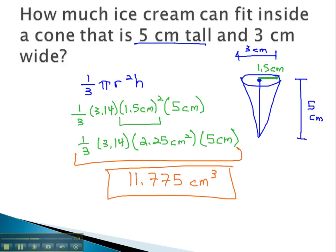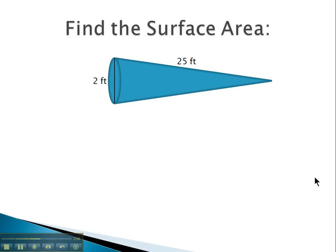Let's try another example. Here, we're asked to find the surface area of this cone. Again, the formula for surface area was pi r squared plus pi r s, where s is that slanting height from the peak to the edge of the circle.